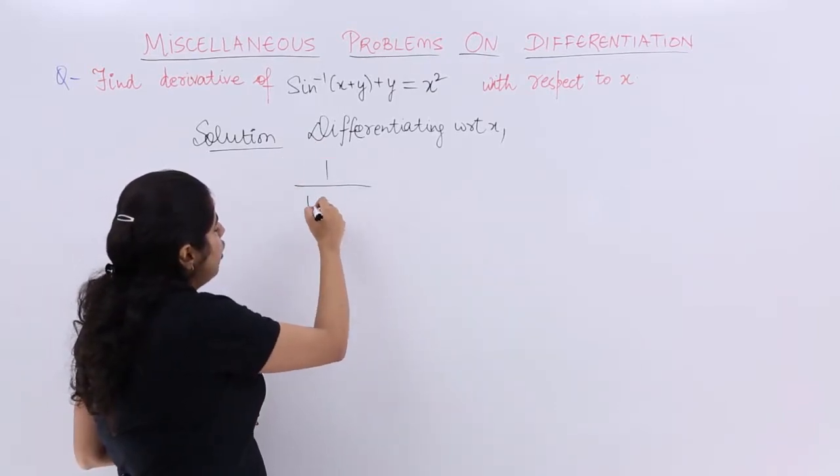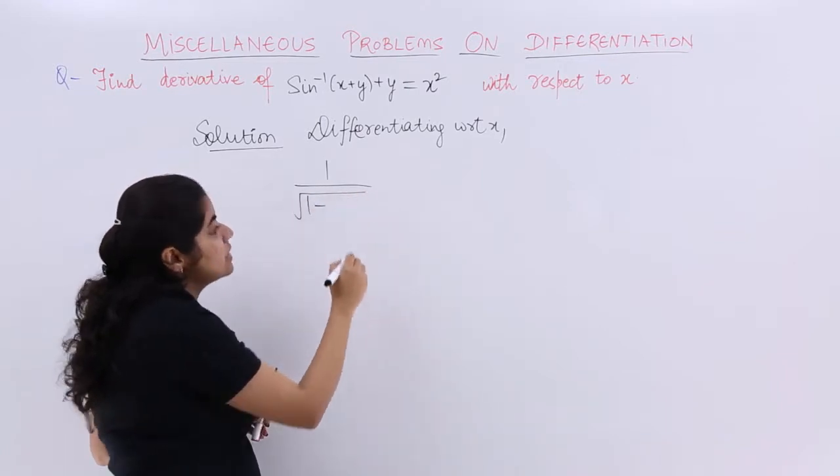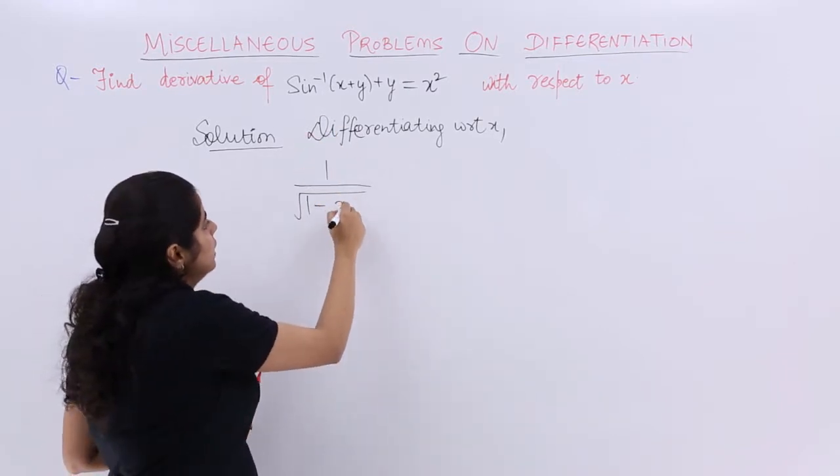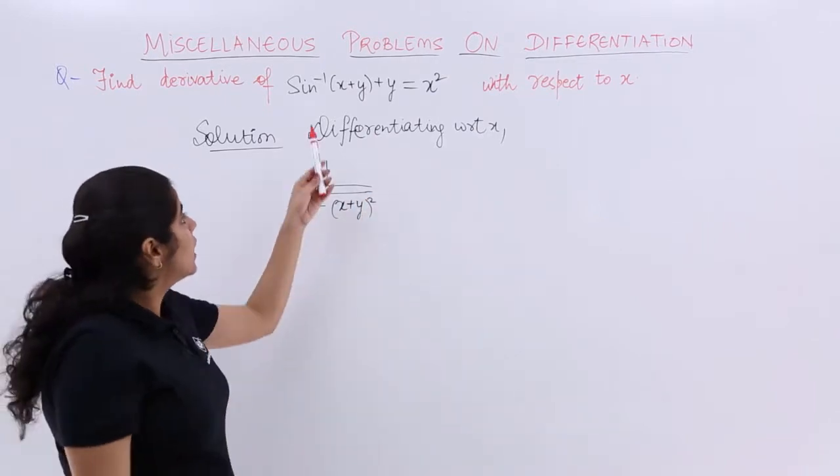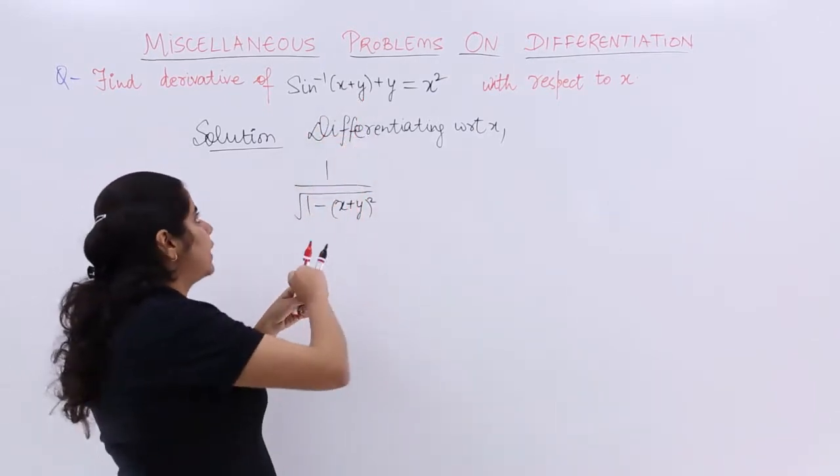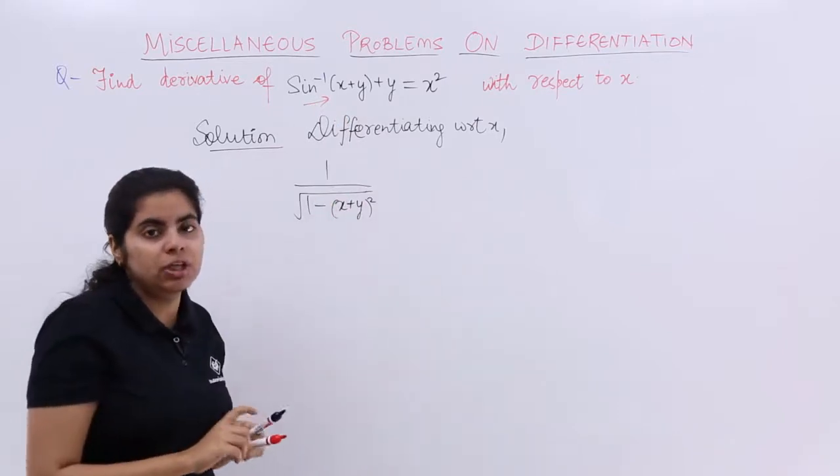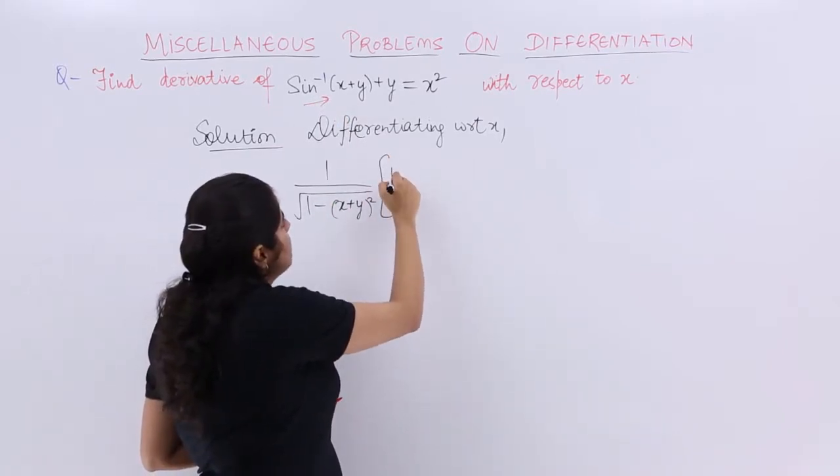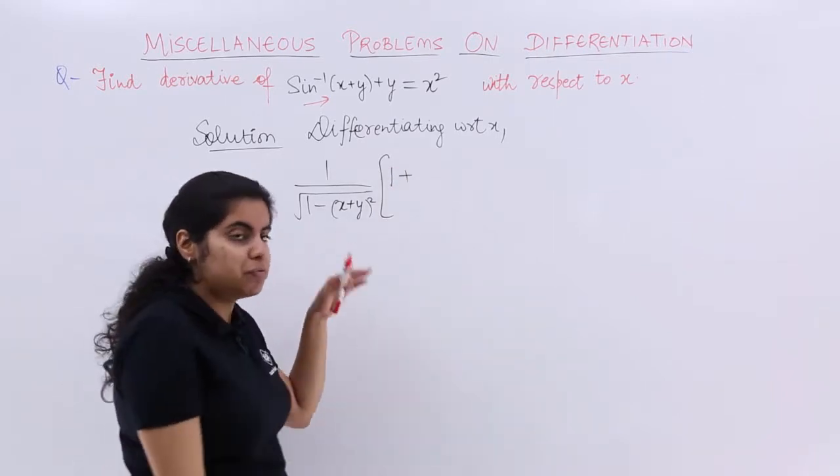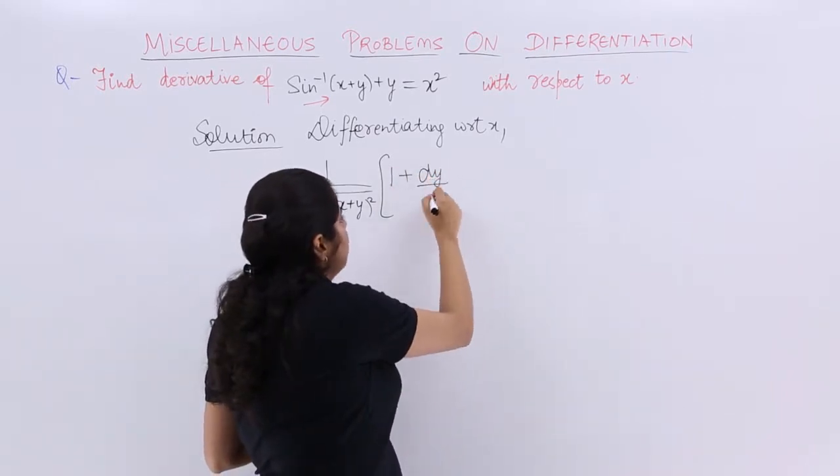Then 1 upon under root 1 minus (x+y) whole squared. And once you have done with this, according to the chain rule, you cannot stop here. You have to actually differentiate x+y also. Differentiation of x+y, 1 plus dy/dx for y.